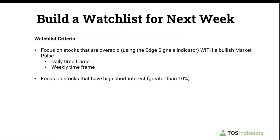Once we have that list of stocks, we'll run it through our short interest scanner, focusing on stocks that have high short interest — with high meaning greater than 10%. You'll see just how easy this process is, especially once you start using things like ThinkScript code, along with our short interest scanner, which allows you to bulk analyze a group of stocks.